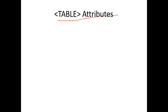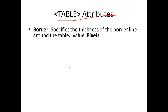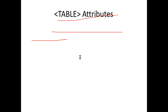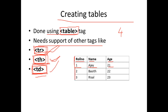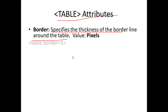The first attribute is table border, which is used to specify the thickness of the border line around the table. The value is given in pixels — for example, border equal to 1 pixel or 5 pixels. If the value is 0, we cannot see the border. For example, table border equal to 3.